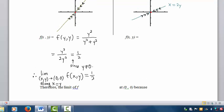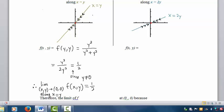To recap, along this line x equals y, except at the origin, the function f has value 1 half at every point. So the limit is also 1 half.